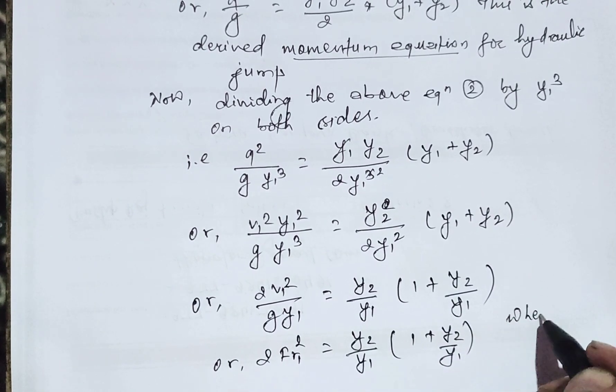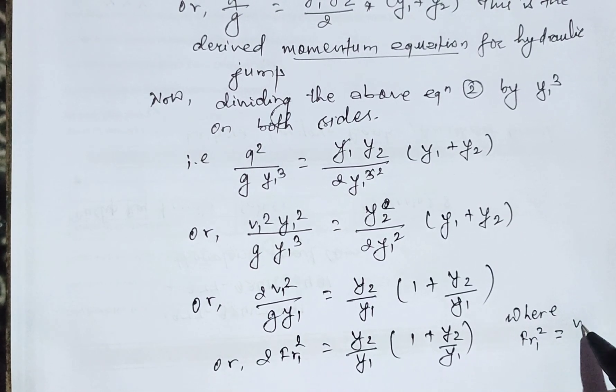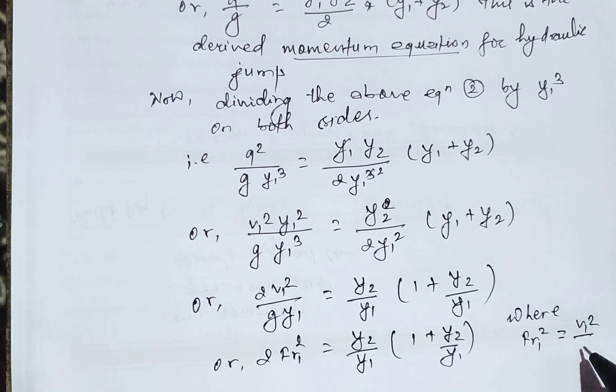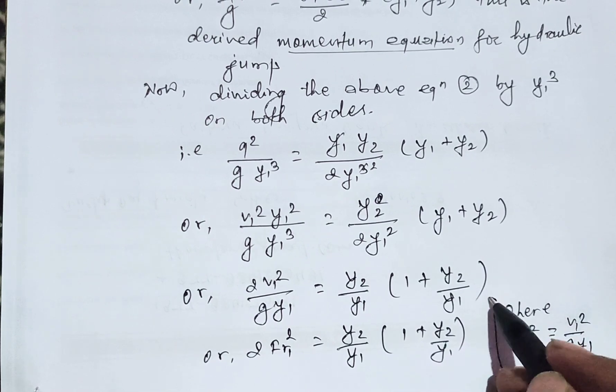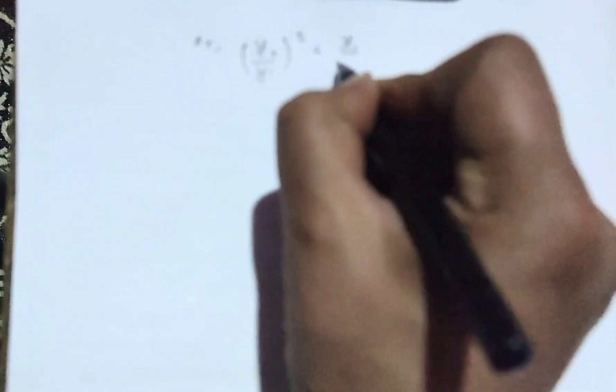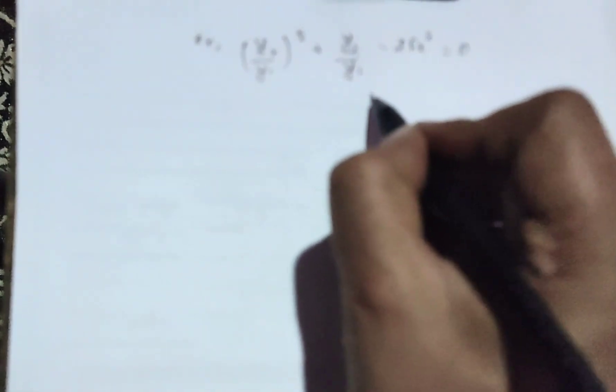Where FR1 squared equals v1 squared divided by g·y1. On solving this equation: (y2/y1) squared plus (y2/y1) minus 2·FR1 squared equals zero. This is a quadratic equation in the form of a standard quadratic.